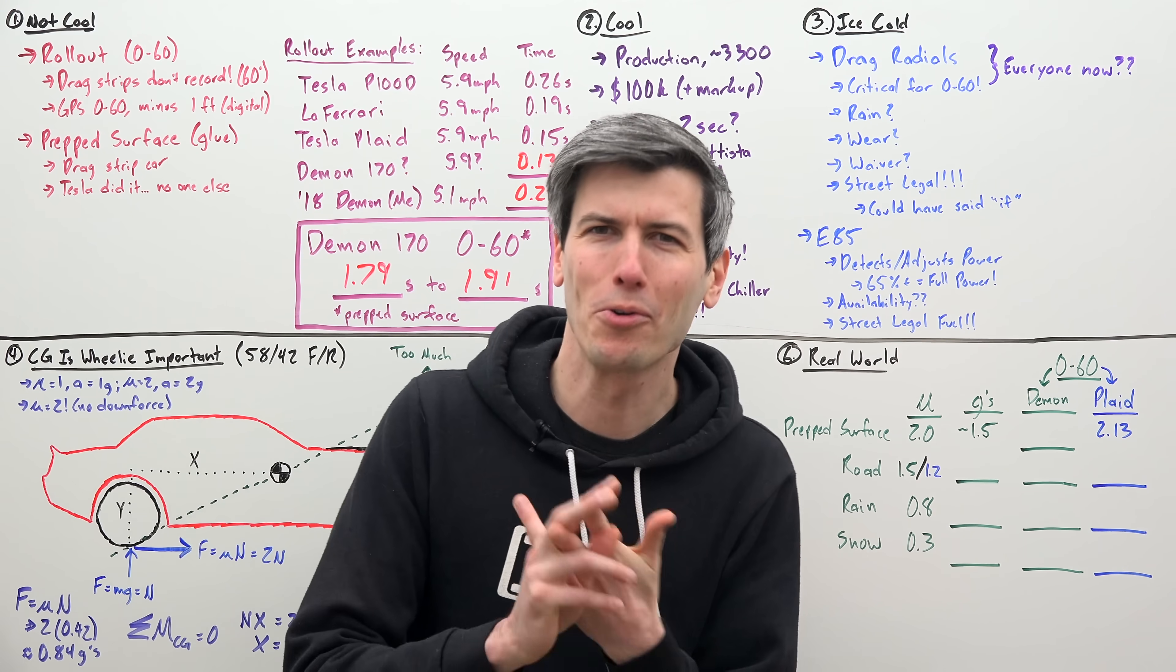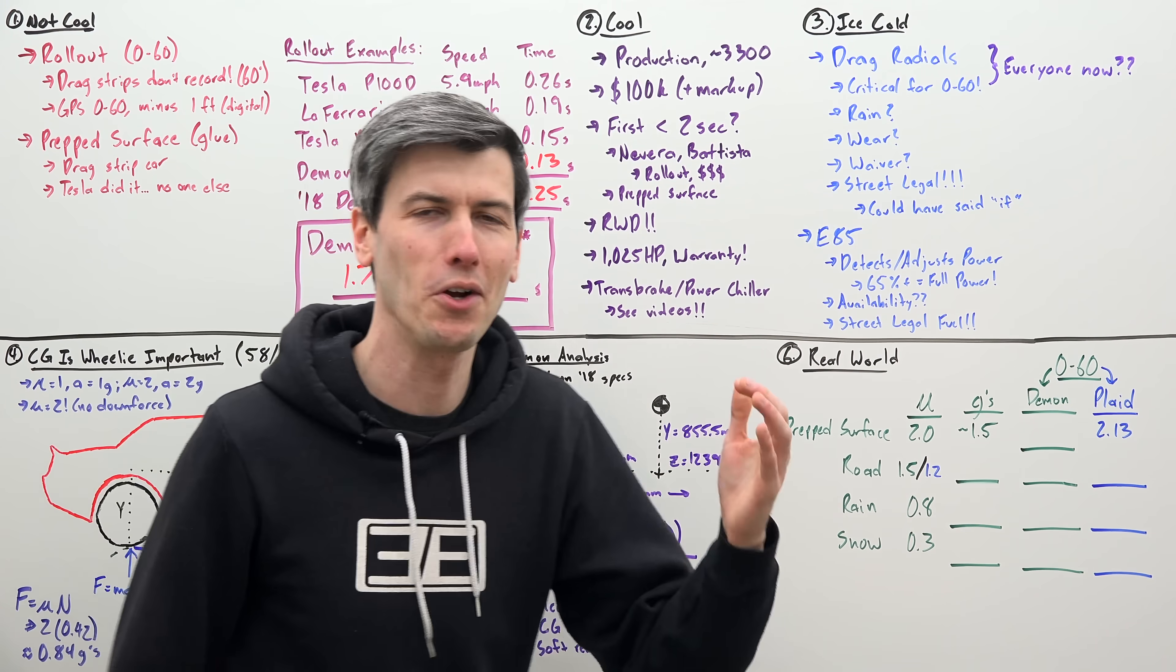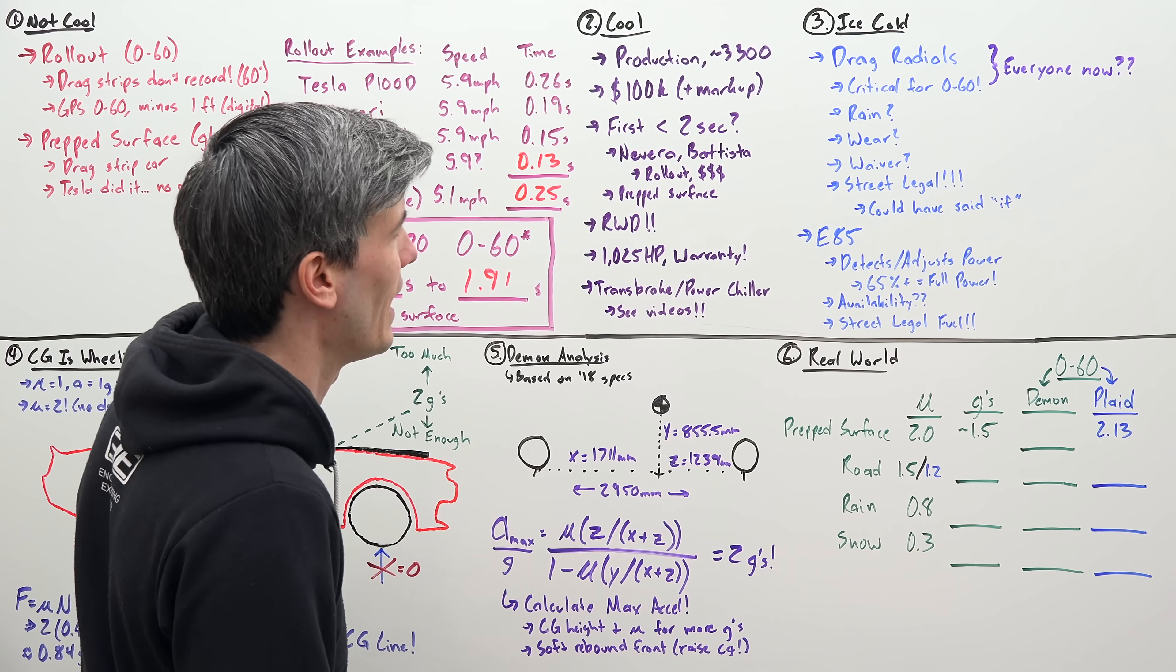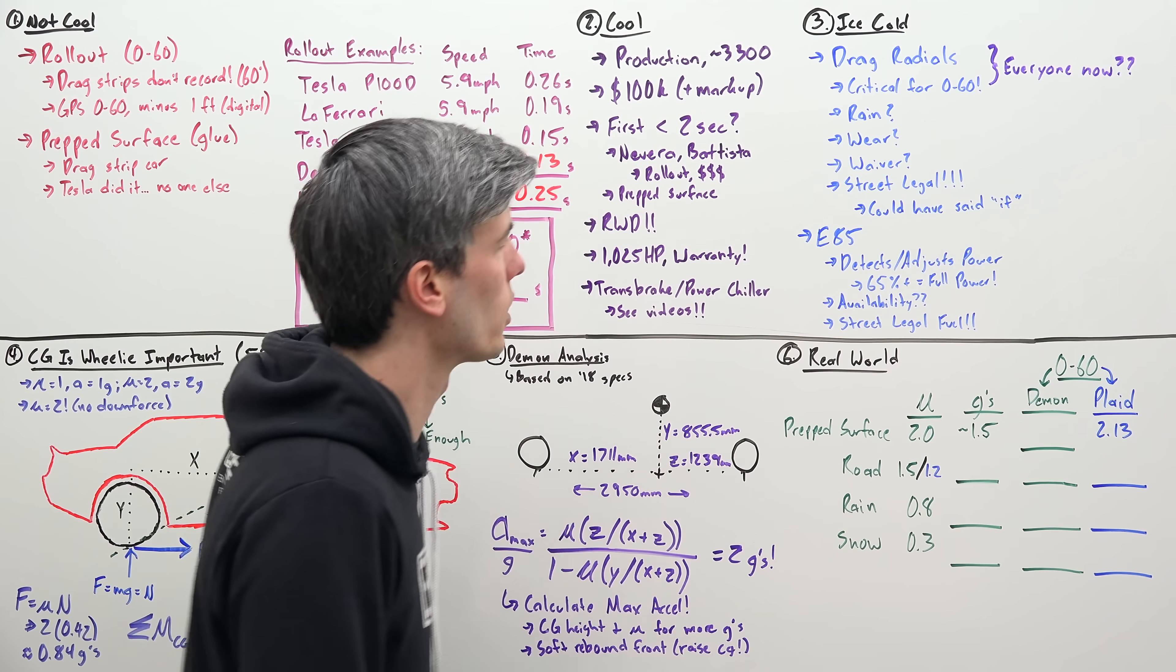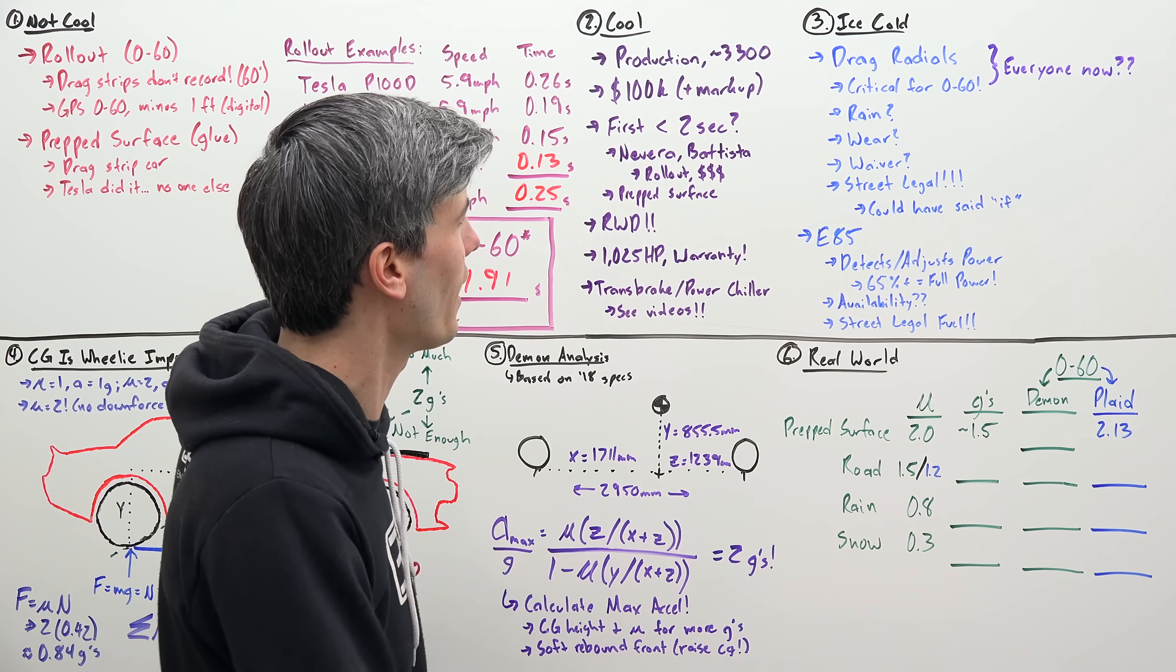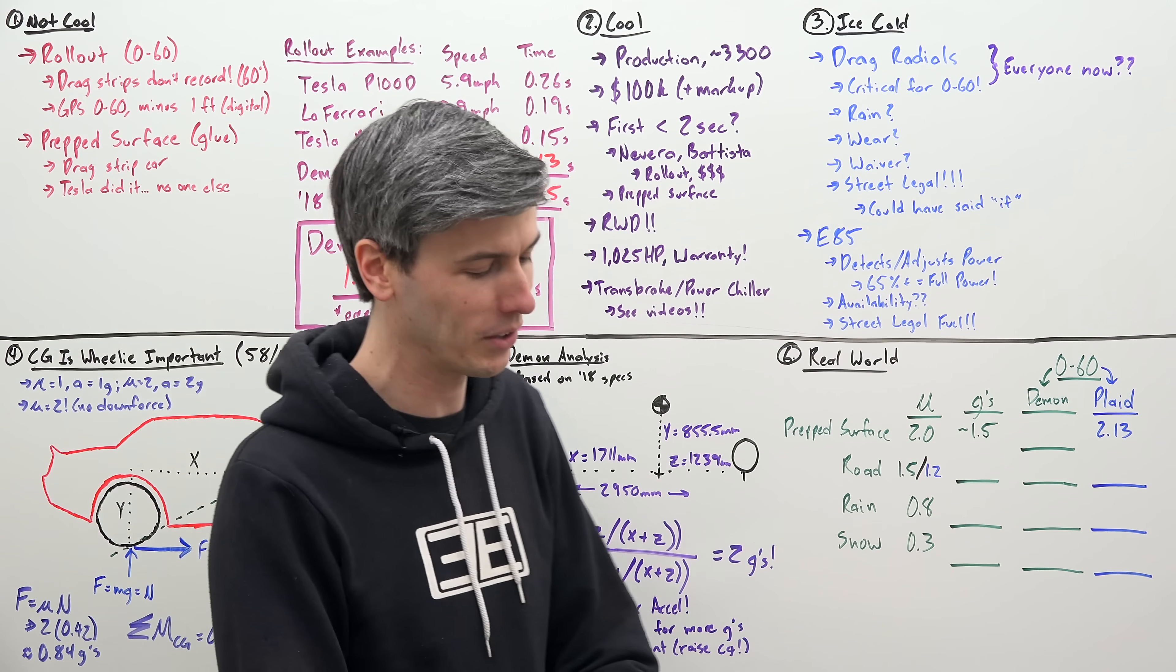Now two more really cool disclaimers that go along with this 0 to 60 of the Dodge Demon. First of all, it's on drag radials. And you might be like, what? That's cheating. But it's not. They're street legal. They took drag radials. They put some grooves in them so that they could make them street legal. They did the work. They're bespoke to this vehicle. And of course, they are critical for that 0 to 60. And that's how you're going to get that extra grip for the incredible launch. But they did it. They put street legal drag radials on a production car. Are they going to be great in the rain? Probably not. Are they going to wear really fast? Probably. Do you have to sign a waiver to use them? Apparently so.